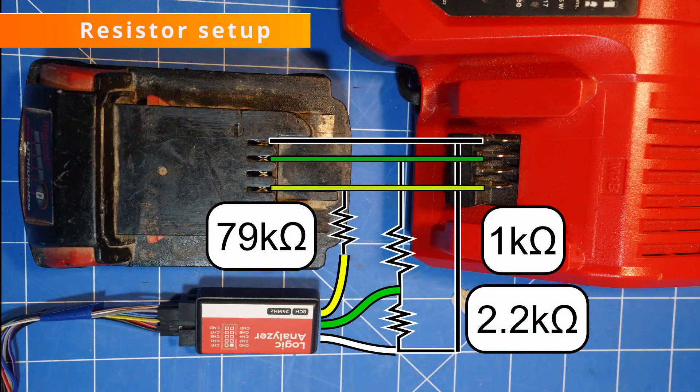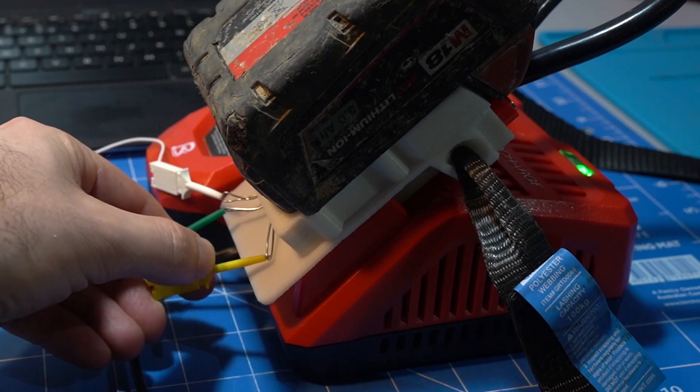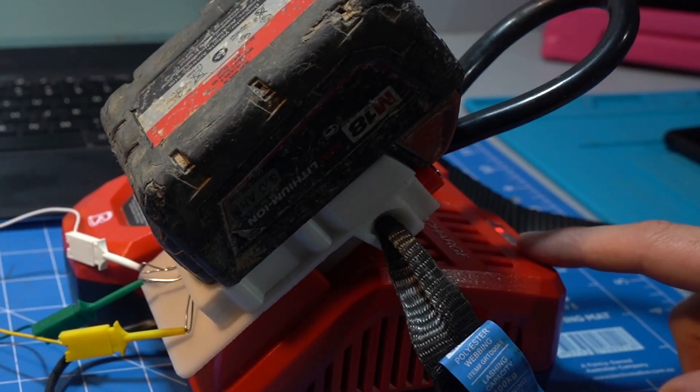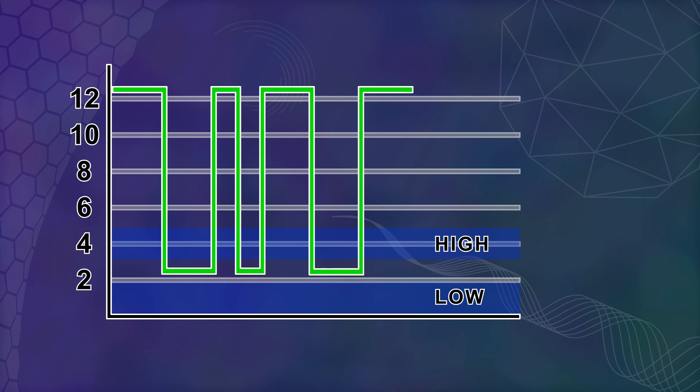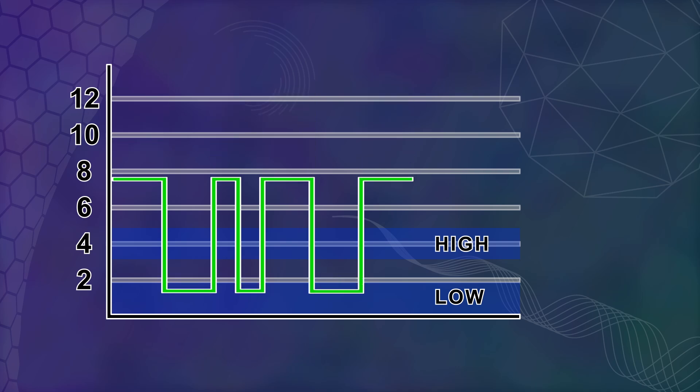In order to document this digital mating ritual without spooking them, we need a few resistors. Without these, the logic analyzer makes J1 go limp and the charger gets frustrated and goes home. Also, the J2 pin is working at 12 volts, so we need to drop it down to around 5 volts for the logic analyzer to be able to read it.